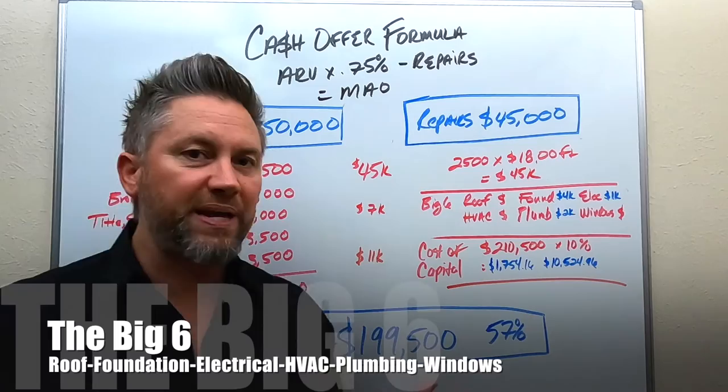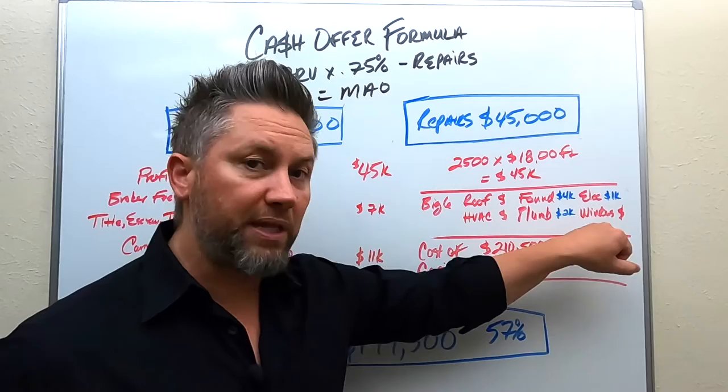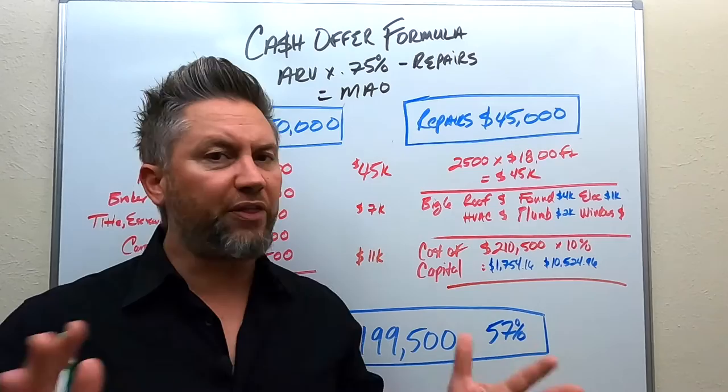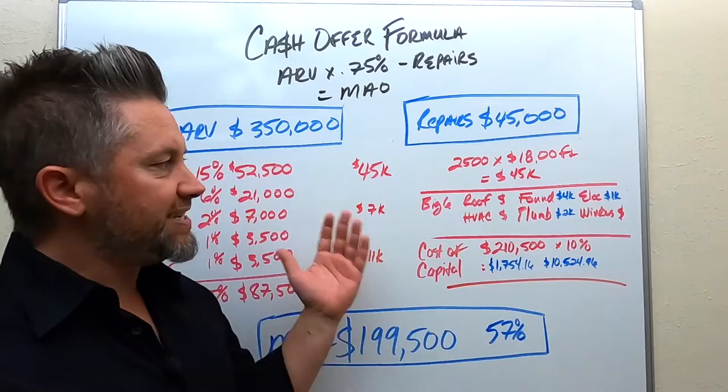The next item I call 'the big six' — these are additional expenses on top of your cosmetics. The big six are: roof, foundation, electrical, HVAC, plumbing, and windows. Windows can be a really big ticket item. If you haven't done a lot of properties, these expenses will eat you alive, throw off your profits, and can cause you to actually lose money on the transaction. You want to take the cosmetic repairs plus the big six, and have licensed professionals give you bids.